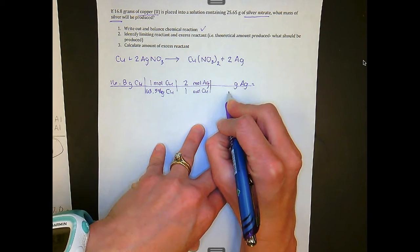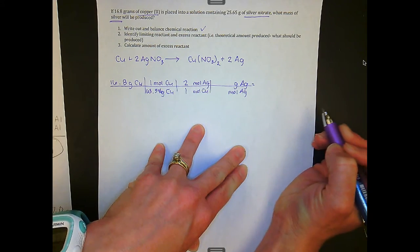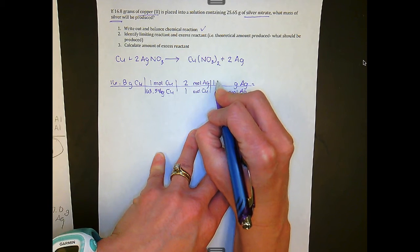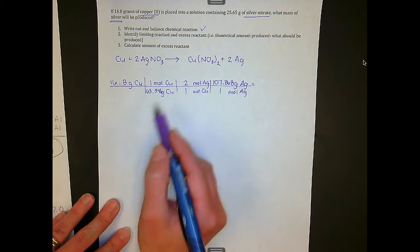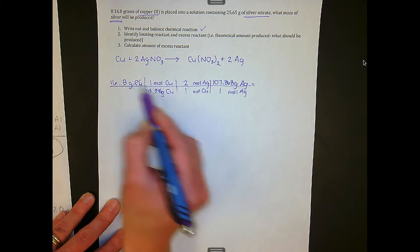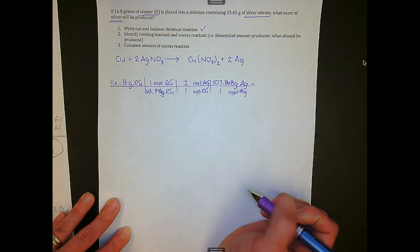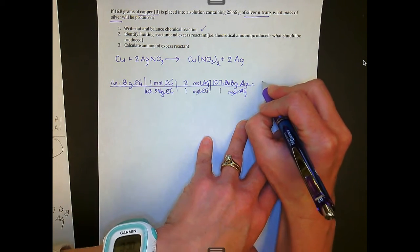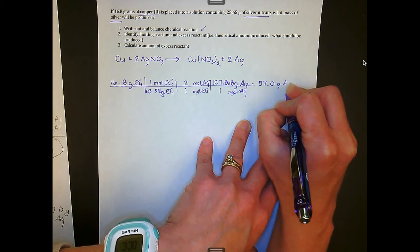Moles of silver drops down, and again we need molar mass. One mole of silver, from the periodic table, weighs 107.868 grams. All of our units cancel out and we are left with grams of silver, which is exactly what we wanted. When we put that in our calculator, we end up getting 57.0 grams of silver.